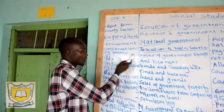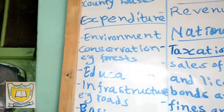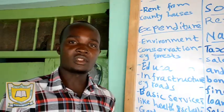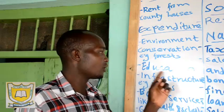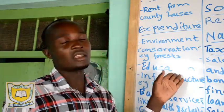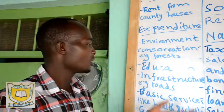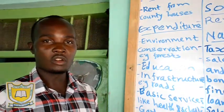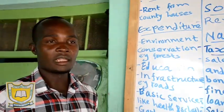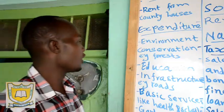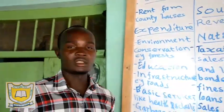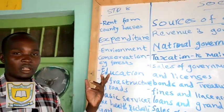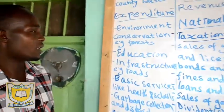Now county government expenditure — how is this money used? Number one: environmental conservation, like forests in the county. The government can establish conservation measures for forests — defending them, planting trees, and so on. Then we have education: provision of learning materials to learners, building new schools, building facilities like toilets in schools, and maintaining schools so that teachers and pupils are well catered for. Also, infrastructure like roads — the county government expands and builds new roads.